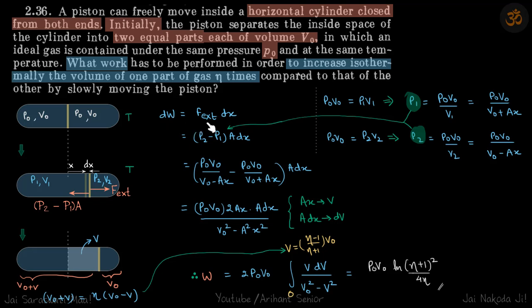So dW is equal to F external into dX. So if the piston is at a distance X and it is further moved by dX, this is dW. And because the piston is moved slowly, the net force on the piston is zero. So F external is P2 minus P1 into A.